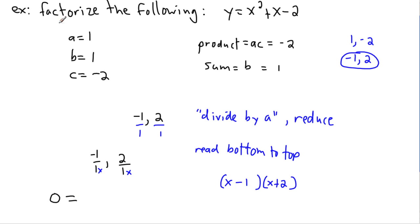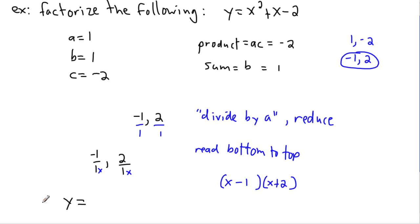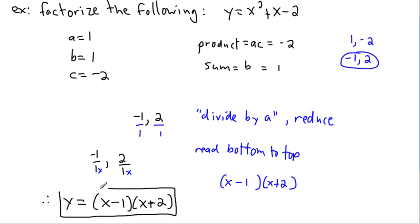So if the question was just to factorize, then y = (x - 1)(x + 2). This is the same thing as x² + x - 2. The advantage of writing it in factored form is that it makes it much easier to find the roots. In this case the roots are x = 1 and x = -2 — those are the values that make the equation equal zero.